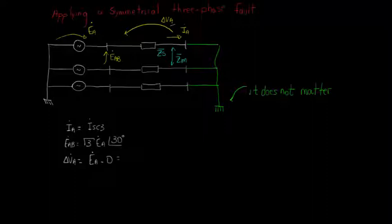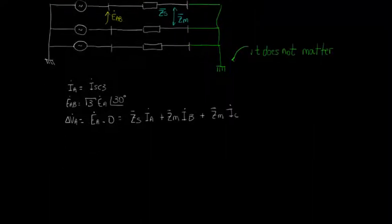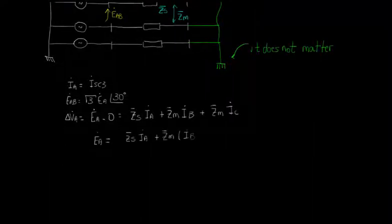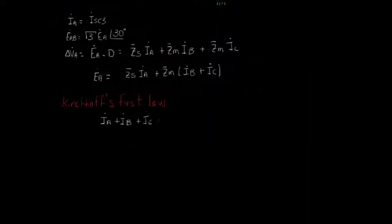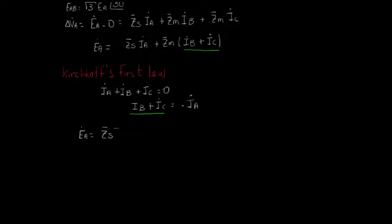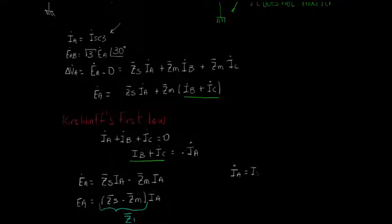Applying KVL in phase A, we get that delta VA is equal to ZS times IA plus ZM times IB plus ZM times IC. Putting ZM in evidence, we can write this equation here. Now, applying KCL in the fault node, we get that IA plus IB plus IC is equal to 0, and by consequence, that IB plus IC is equal to minus IA. Substituting it in the first equation, we can find that EA is equal to ZS minus ZM times IA, and you have already seen that ZS minus ZM is the positive sequence impedance Z1.